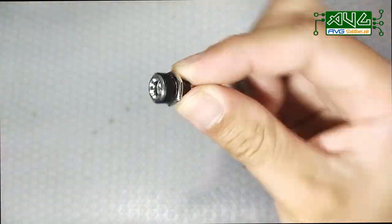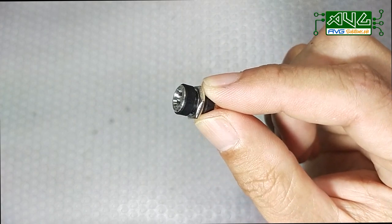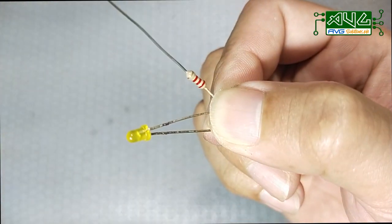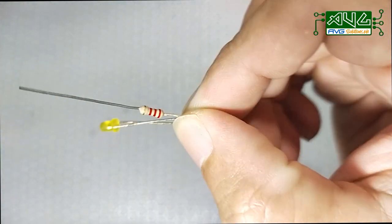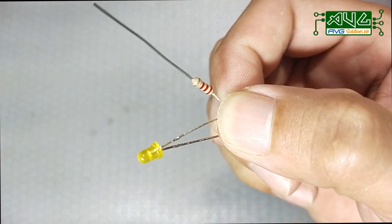DC socket para ma-charge natin yung powerbank. Gagamit ako ng 3mm na LED at dropping resistor para sa charging indicator.